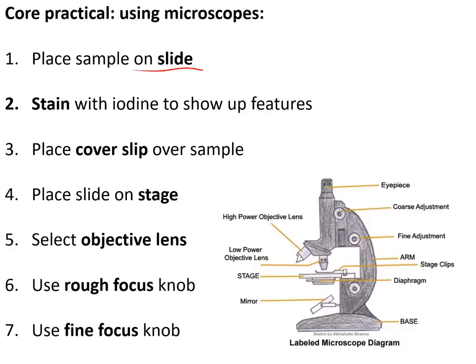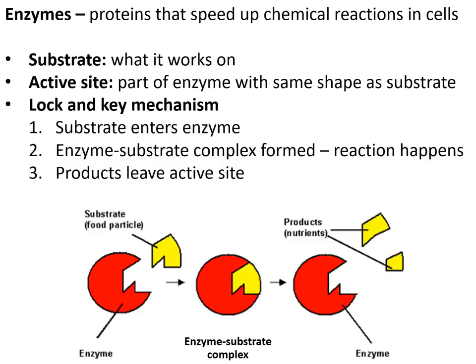In the microscope core practical, we placed a sample on a slide, stained it with iodine to show up the features, and placed a cover slip over the slide to protect it. We placed the slide on the stage, selected the objective lens, used the rough focus to get a rough image, and then the fine focus to get a clearly crisp focused image.